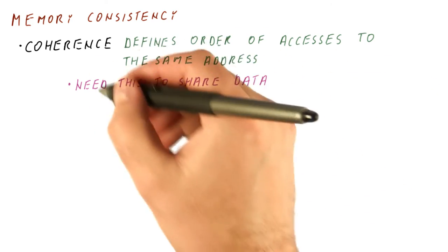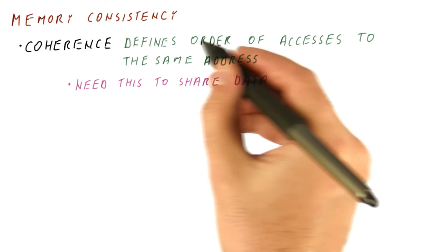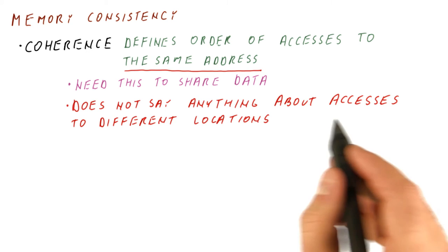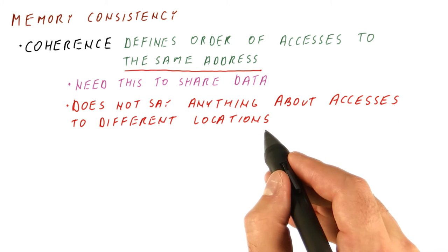An important thing about coherence, however, is that it defines the order of accesses to the same address. It does not say anything about accesses that go to different locations.